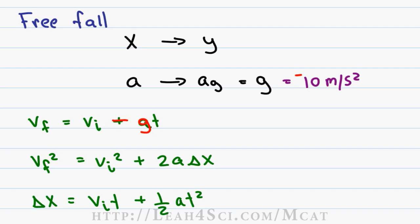The second one has v final squared equals v initial squared plus 2a delta x. We want to swap the x for y, a for g, and then put a negative for the direction of gravity.